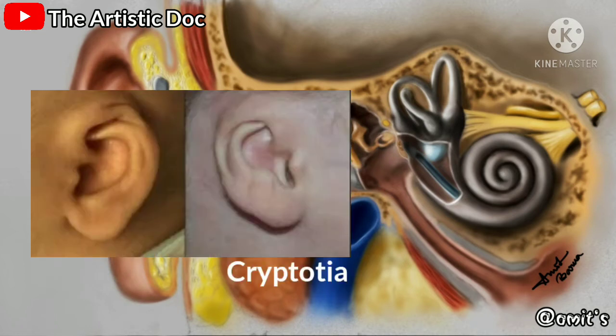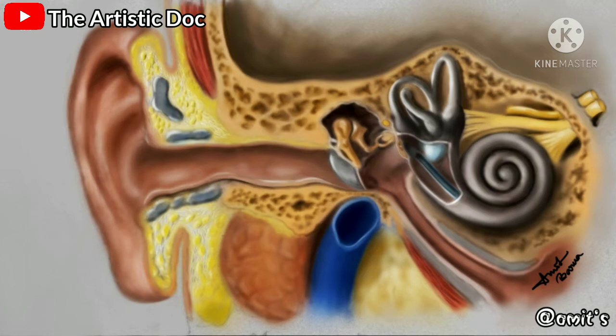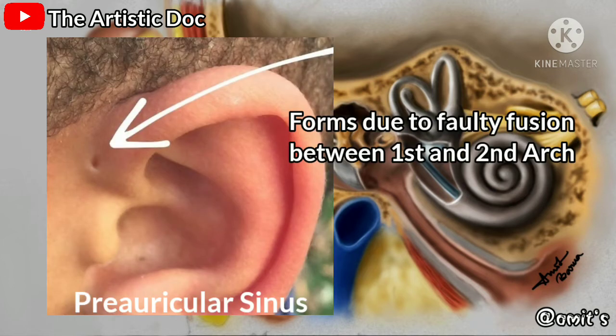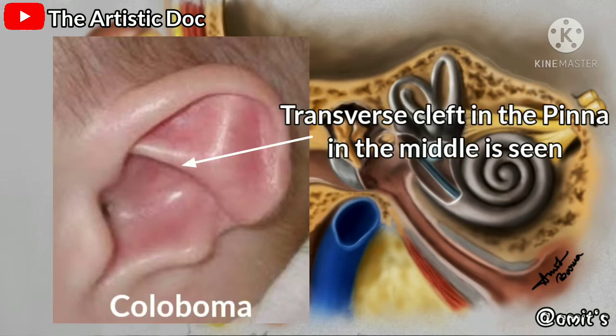Bat ear deformity can be corrected surgically after six years of age. Cryptotia: the upper third of the auricle is embedded under scalp skin; it can be corrected by mobilizing the pinna to normal position and covering the raw area by skin graft. Preauricular sinus forms due to faulty fusion between first and second arch tubercles; in case of repeated infection, surgical excision of the tract is done. Coloboma is a transverse cleft seen in the middle of the pinna.